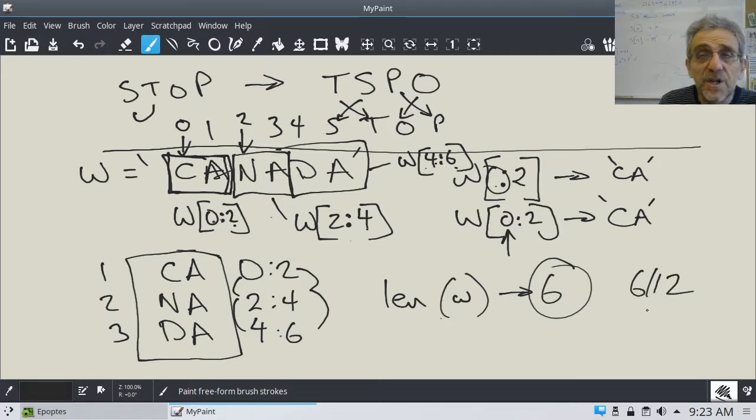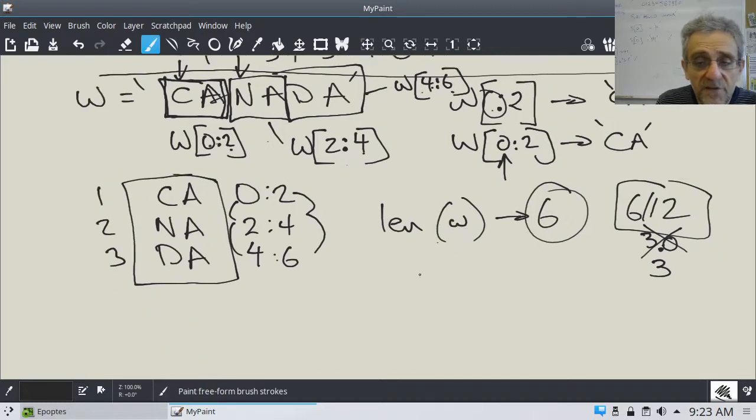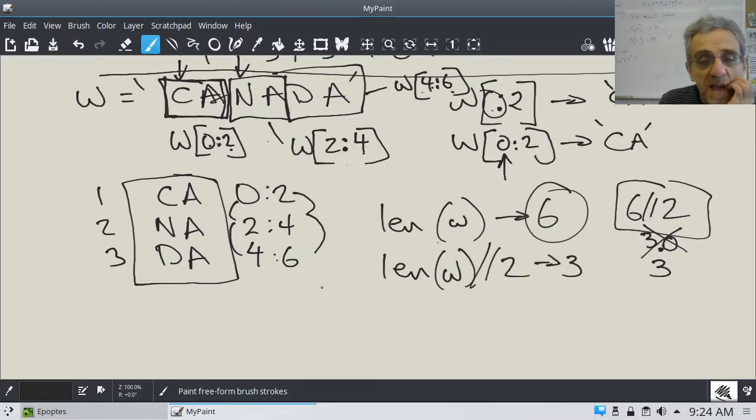And from six, I can get that by going six floor division two. And I say floor division because I want an integer, not a floating point. If I just divided by two, I'd get 3.0, and that's not what I want. I want three. That's why I'm using floor division. So, therefore, the formula would be len w floor divide by two, and that's going to give me three.